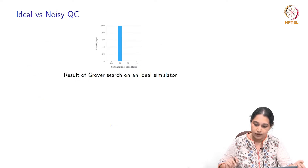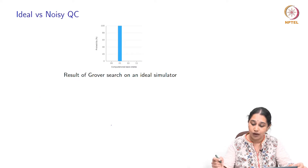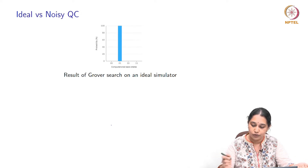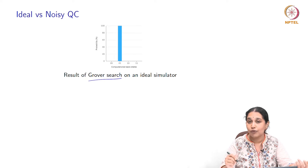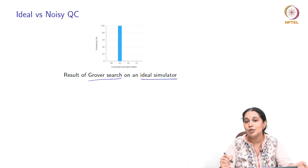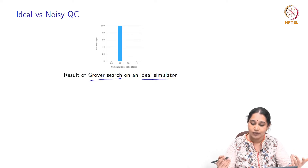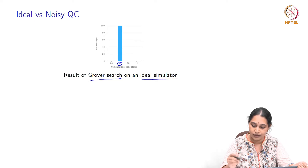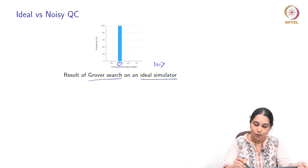Here is an example of what this noise can do — something you might have encountered if you had actually tried to run any of the algorithms we discussed on an actual processor. This is the result of a Grover search simulation performed using the ideal QASM Simulator. This is the result of a simulation of the Grover algorithm. You notice that the solution state for Grover in this case is the two-qubit state ket 0,1, and the simulator leads you to the solution state with probability 1.